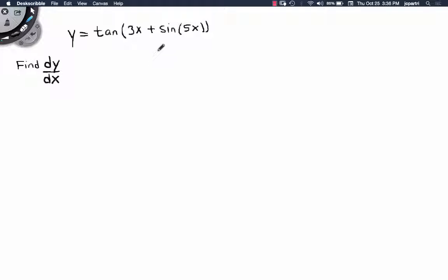So we treat this as a composition once again. The outer function is the tangent, so f(x) equals the tangent of x. The inner function is 3x plus the sine of 5x.